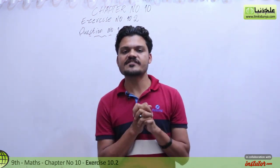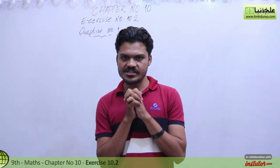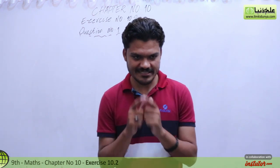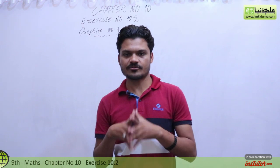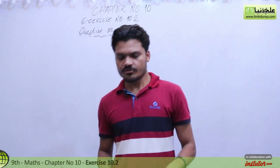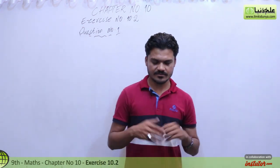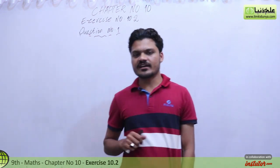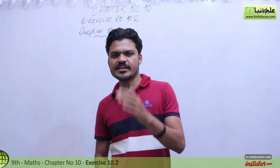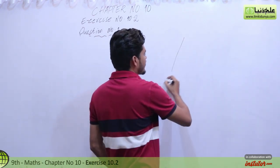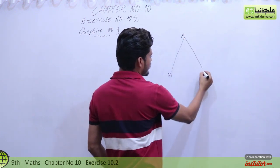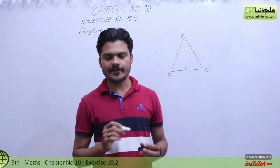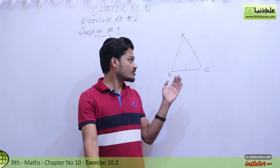You need to take an equilateral triangle and then take any two medians and prove that their lengths are equal. First, let's recall what an equilateral triangle is. An equilateral triangle is one whose three sides are all equal — AB equals AC equals BC. Such a triangle is called an equilateral triangle.